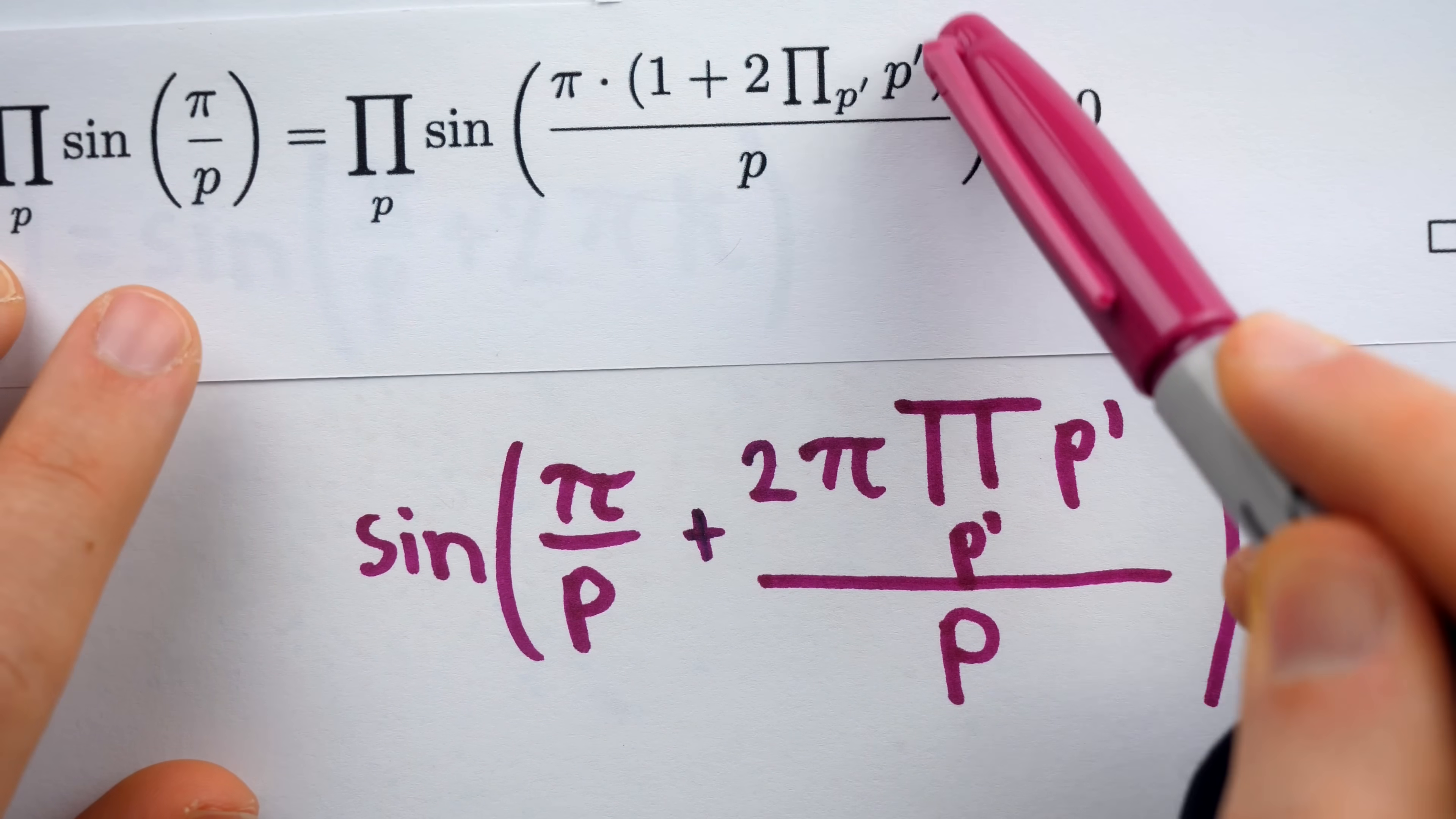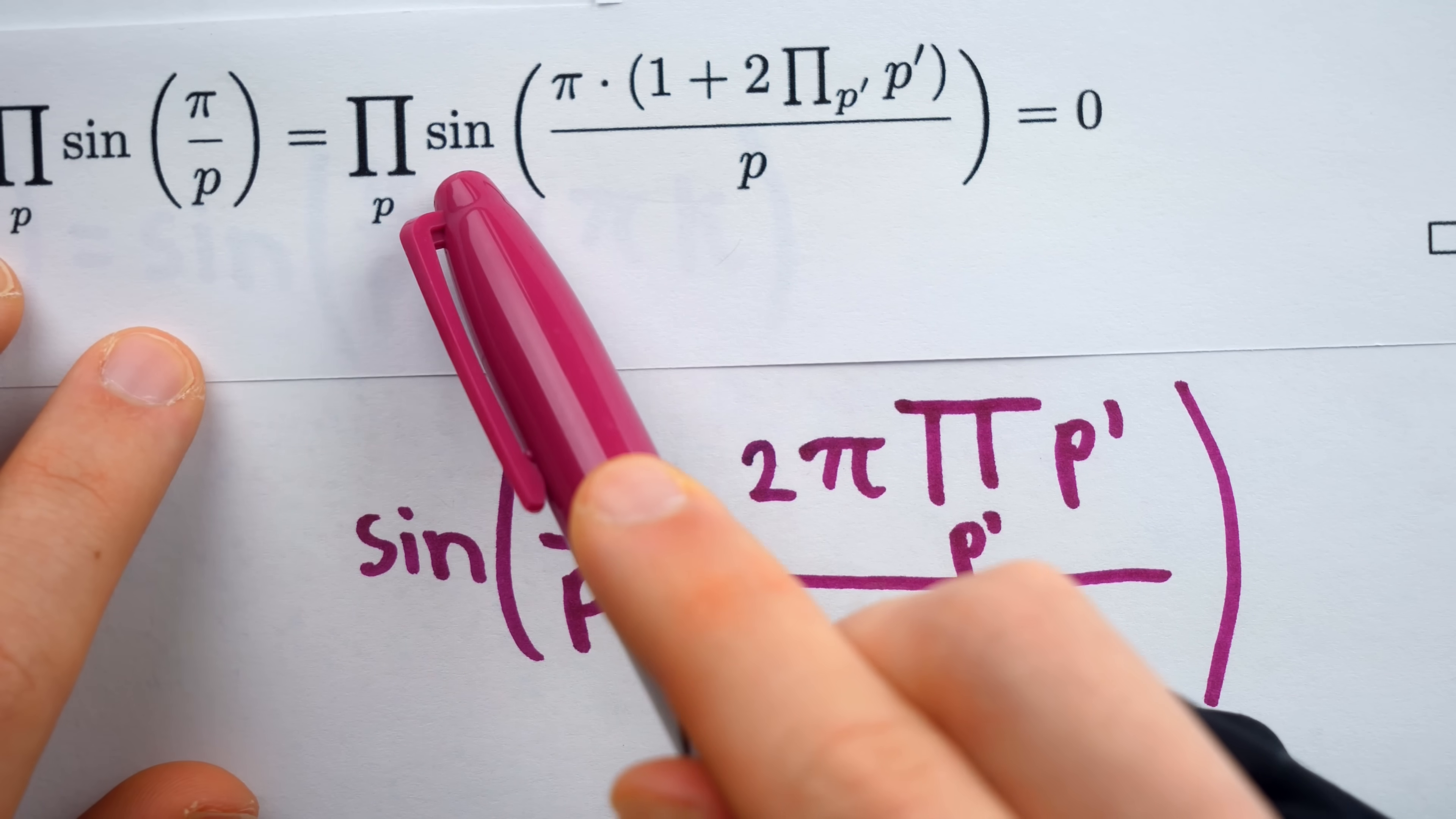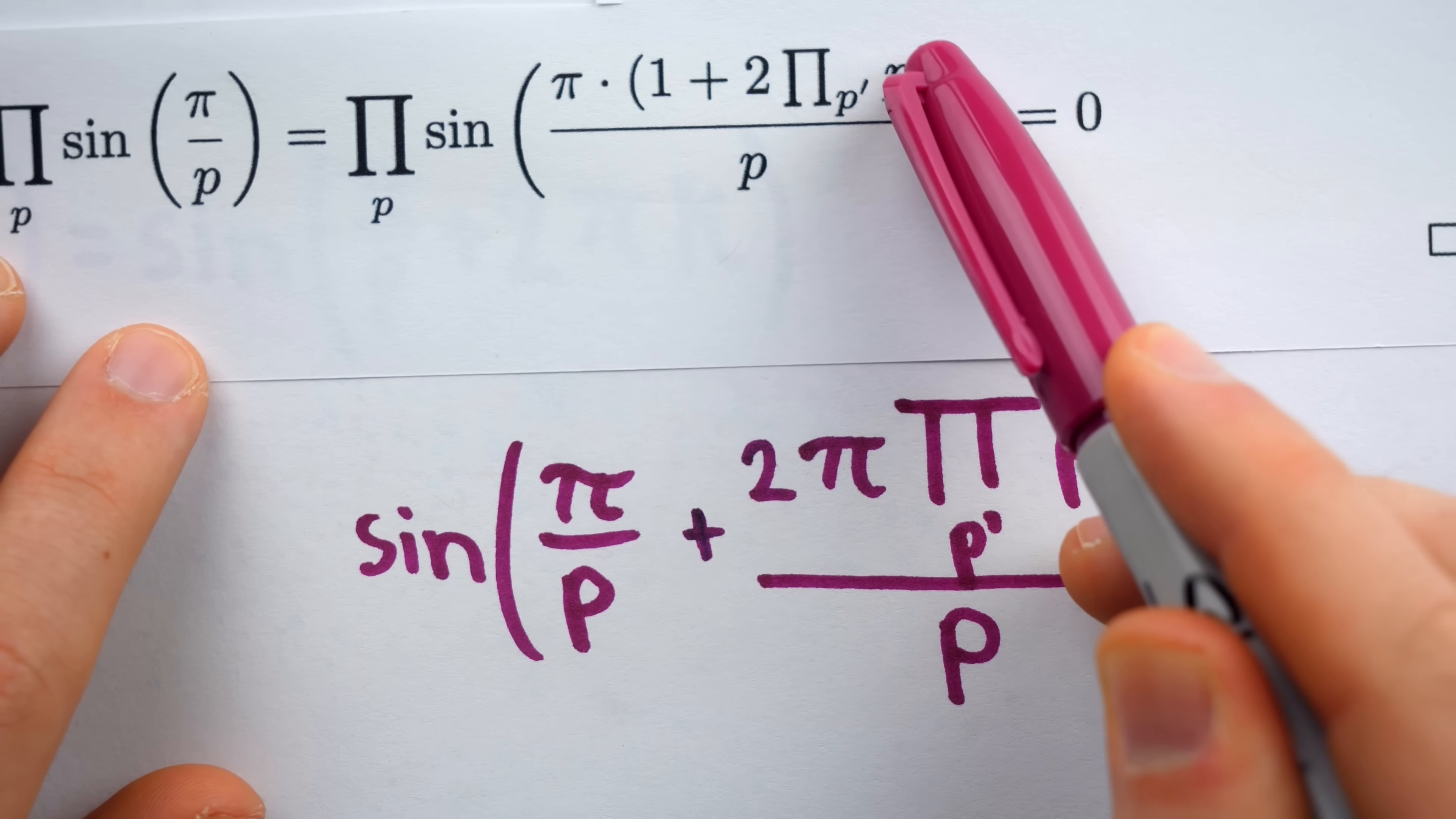And notice how this inner product is using a different variable. It has p prime, whereas the outer product has p. The outer product is a product of these sine functions, and every single one of those sine functions for each prime number p has this entire product contained within it.